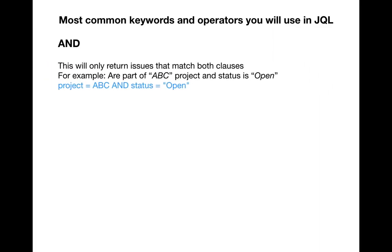The first keyword is AND. AND is the keyword that will return issues that match both clauses, both criterias, or both queries that you are looking for. For example, if you are looking for all open issues in project ABC, you need to use the AND keyword because you are looking for only open issues within that project.